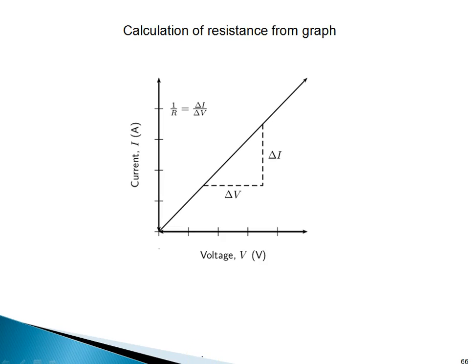Now we will calculate the resistance from the graph. In the slope, we get the voltage and current values. To join all the values, we get such a graph.